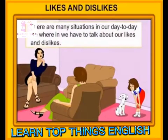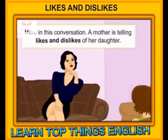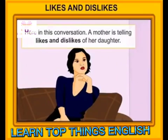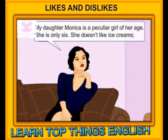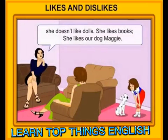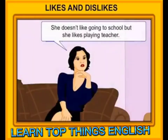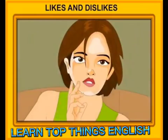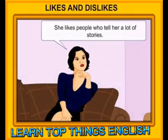Likes and dislikes. There are many situations in day-to-day life where we have to talk about our likes and dislikes. Here, a mother is telling the likes and dislikes of her daughter. My daughter Monica is a peculiar girl of her age. She is only six. She doesn't like ice creams. She doesn't like dolls. She likes books. She likes our dog, Maggie. She doesn't like going to school, but she likes playing teacher. She likes her grandma's place where there is a nice garden. She likes people who tell her a lot of stories.